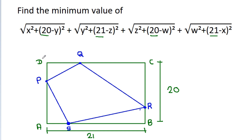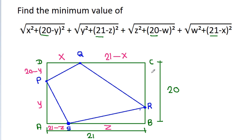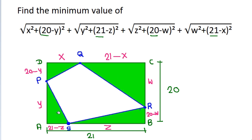Suppose DQ is x, then QC will be 21 minus x. Suppose AP is y, then PD will be 20 minus y. Suppose BS is g, then AS will be 21 minus g. And now we have 4 triangles: triangle 1, 2, 3, and 4.